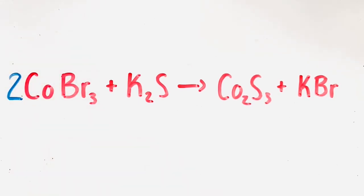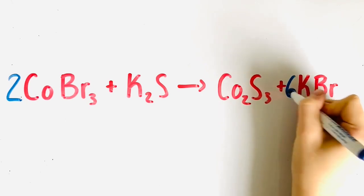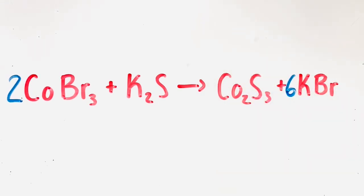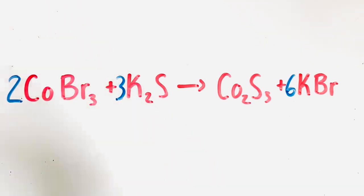Since we added a two in front of COBr3, that also changes the amount of bromine atoms to six because two times three is six. If we want six bromine atoms on the product side, we will add a coefficient of six in front of KBr. This means that the bromine atoms on each side are now balanced. Not only are there six bromine atoms, but there are now six potassium atoms on the product side, so we have to go to the potassium on the reactant side and add a coefficient of three in front of it because three times two is six, giving it six potassium atoms.